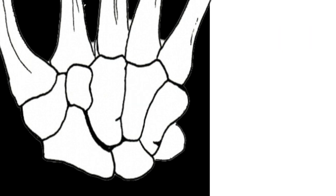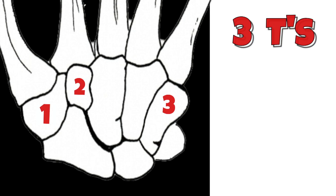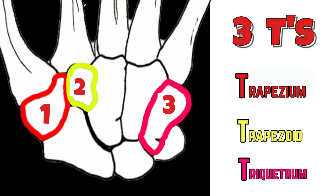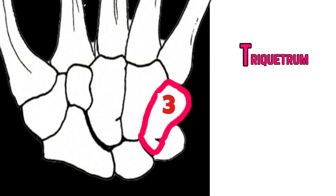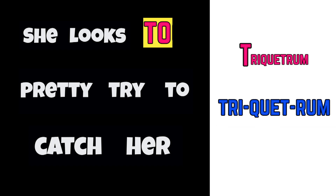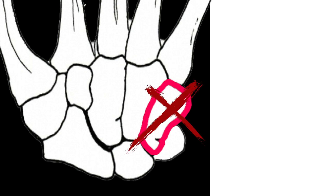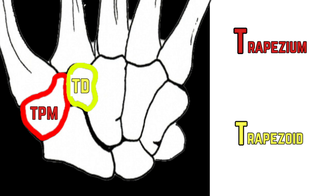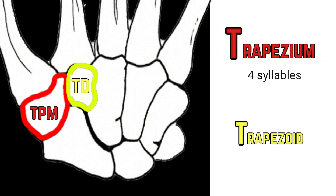As you may have noticed, out of the eight carpal bones, three of those bones started with the letter T: trapezium, trapezoid, and triquitrum. I'm going to show you a way to help you memorize and differentiate these three bones. Triquitrum is the third bone in the mnemonic — 'she looks tri' — and it also has the word 'tri' in the name, and tri equals three. Now for the other two: trapezium is the bigger of the two bones and has four syllables, where trapezoid is the smaller of the two bones and only has three syllables.